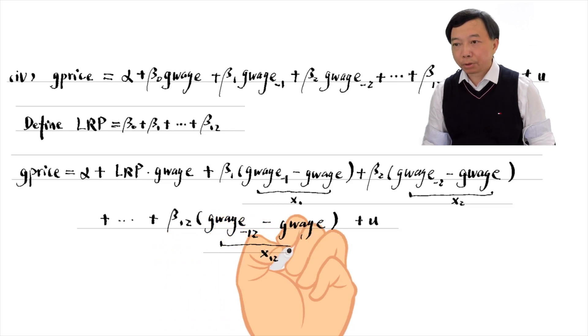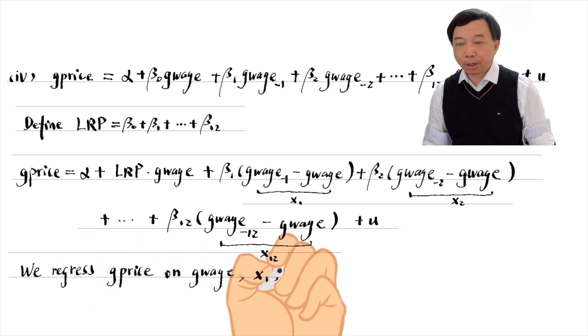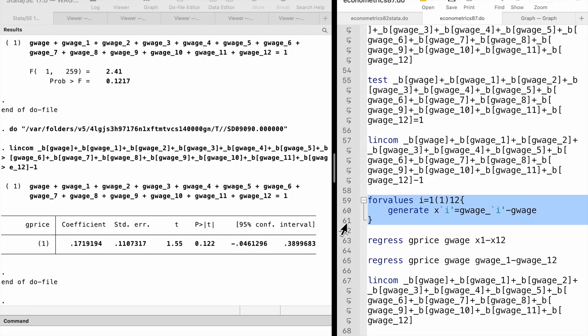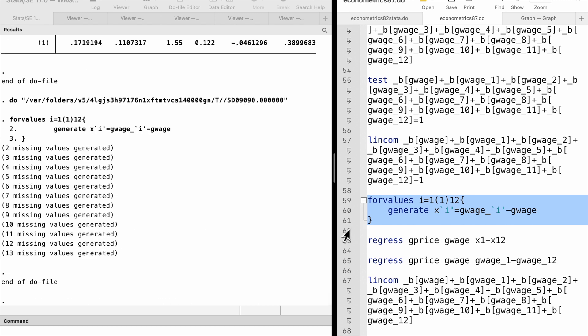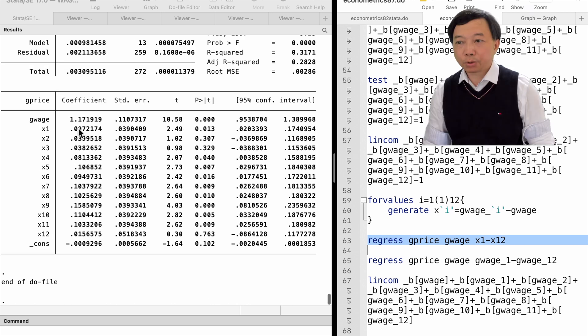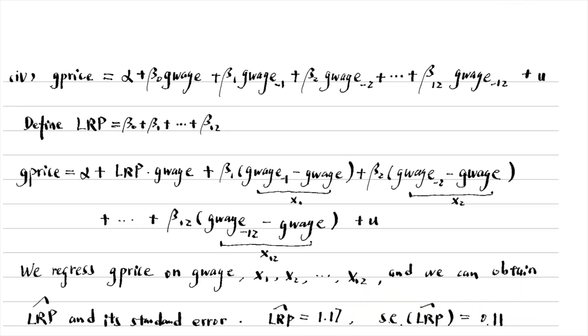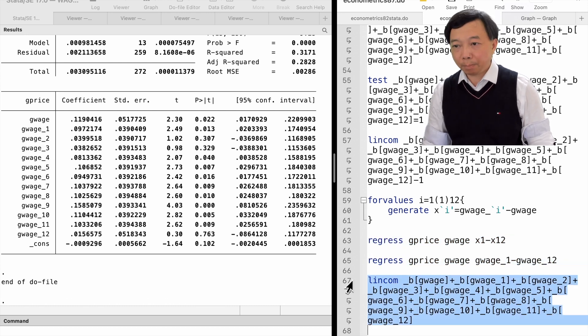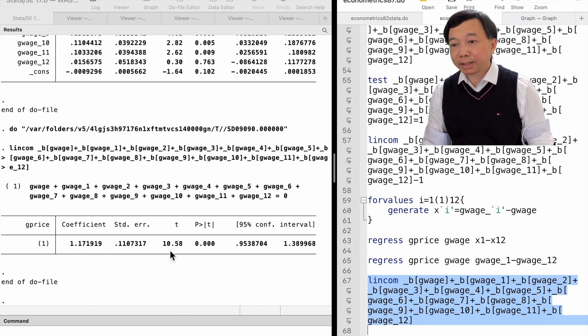We regress g_price on g_wage and the new variables x1 to x12. The coefficient on g_wage is the estimated long-run propensity. It is 1.17 and standard error is 0.11. If we don't use this method, we can use the Stata command lincom after the original regression to obtain the estimated long-run propensity and standard error. We add the sum of all coefficients after the lincom command. We should have the same result.